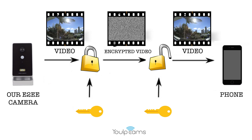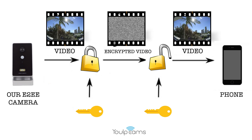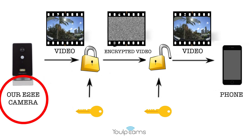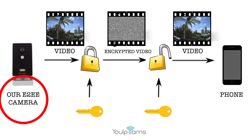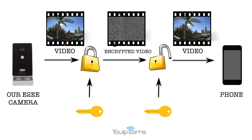Do you already own a camera that's not protected by end-to-end encryption? This is not a problem. Our E2EE camera will act as a secure hub and will encrypt your other camera's video data just like our own camera.